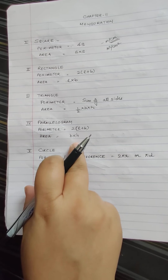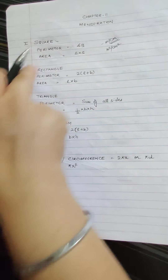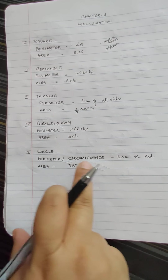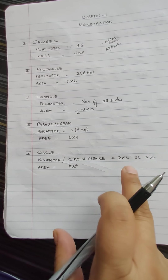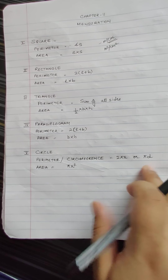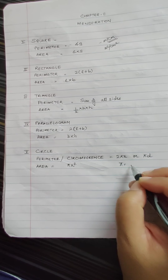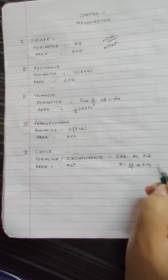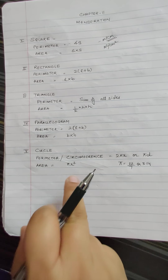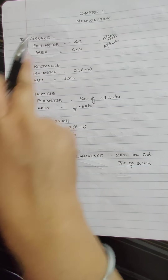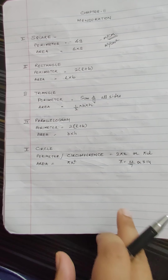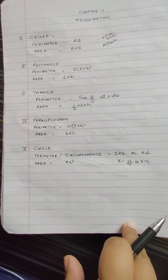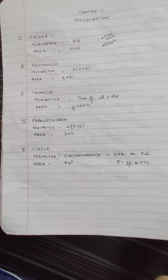Area of parallelogram is base into height — you have done this last year. Circle: perimeter is circumference, which is 2πr or πd, where π is 22/7 or 3.14, and area is πr². You all have done this last year, so we will do a few more questions on this and then move to the new formulas.